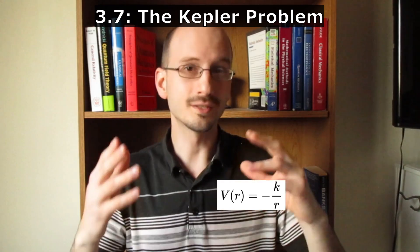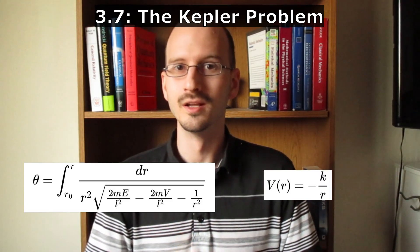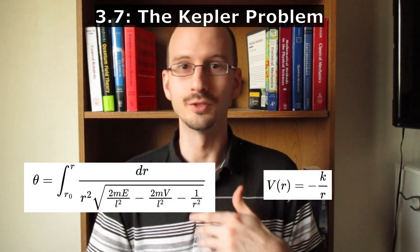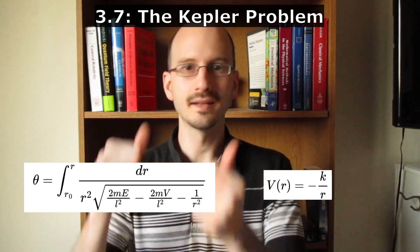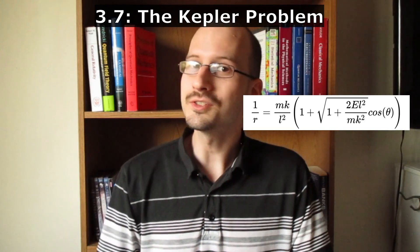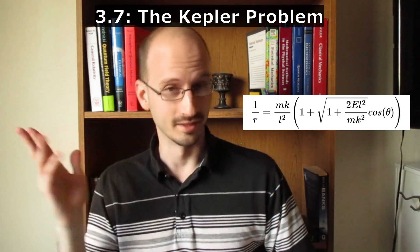Now that we know the potential, we can do that nasty theta integral, which I'm pretty sure I had to do as a homework assignment. When we do that, this is our orbit equation, which, if you know your equations, is obviously the equation of a conic section.